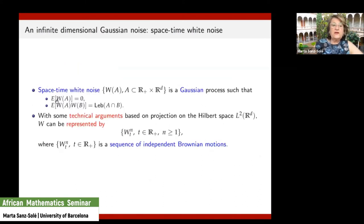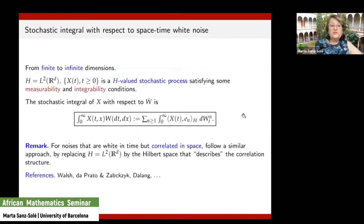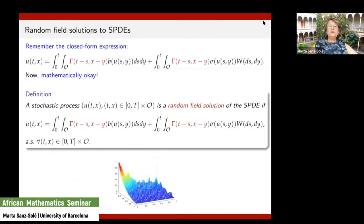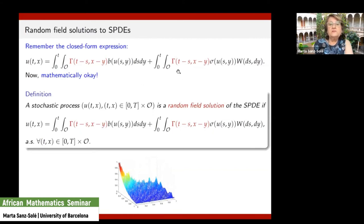These ideas can also be applied to noises more general than space-time white noise. For other Gaussian noises, there is a corresponding Hilbert space H, and the process of integrating with respect to a more general noise can be carried out in the same way. This theory of stochastic integration with respect to space-time white noise and more general noises has been developed since the 1990s by many people. Now we are in business — remember the closed form expression for the SPDE. The existence of a fundamental solution or Green's function means the SPDE becomes an integral equation.